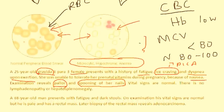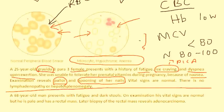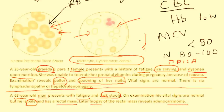Second vignette: a 68-year-old man presents with fatigue and dark stools. On examination, vital signs are normal but he is pale and has a rectal mass. Biopsy of the rectal mass reveals adenocarcinoma. In men, the most common cause of iron deficiency anemia is often GI tract pathology — bleeding in the colon due to cancer. The blood in the stool can be dark, especially with lower GI tract pathology.